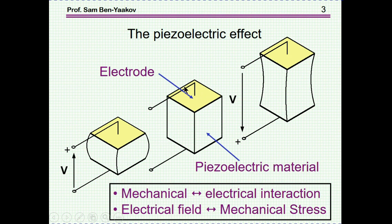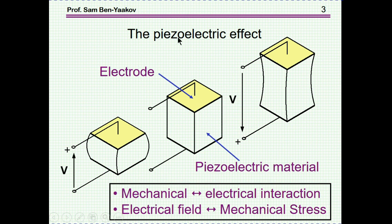We can see here without any interaction, and here there's a positive and negative effect. These are of course exaggerated — the movement of a piezoelectric piece would be in the nanometer or micrometer range. Larger deviation could be achieved by stacking a number of these in series.